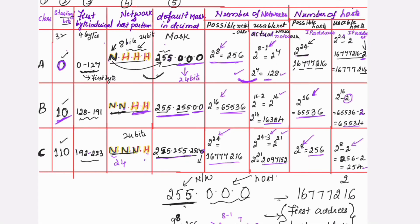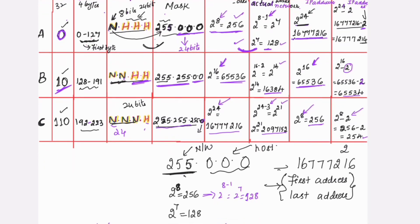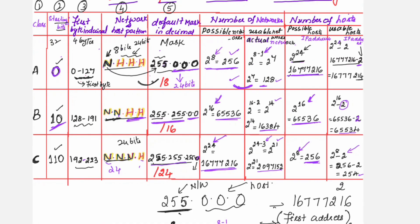For Class A, 256 possible networks exist, and in each network 2 to the power of 24 hosts are possible. For Class B, 65,536 networks are possible and in each network 65,536 IP addresses are there. For Class C, 2 to the power of 24 networks are possible and in each network 256 IP addresses are possible. This was the complete information about classful addressing, which also helps in understanding classless addressing concepts. If you find this useful, please like, share and subscribe. Thank you, bye-bye and take care.